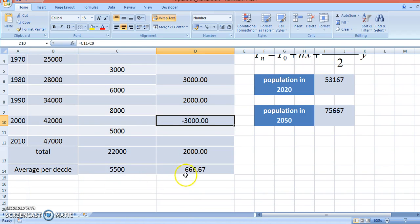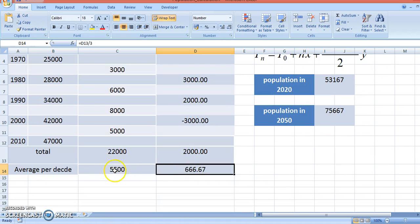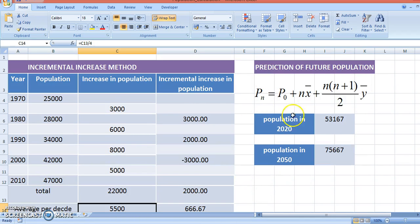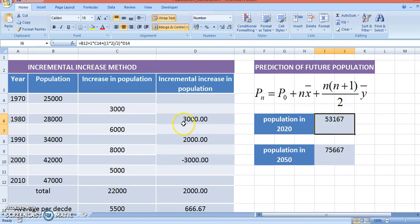Now what I will do? I will find out the average per decade. I will add all together, divide by 3, and we are getting the average incremental increase in population. I already have the average increase in population. With these two terms, I can use this equation: Pn = P0 + nx̄ + (n(n+1)/2)ȳ. Here, n is 4, so n times x̄ is 4 into 3500, and n(n+1)/2 into ȳ is 4 into 5 by 2 into 666.67. We are getting this increase in population.